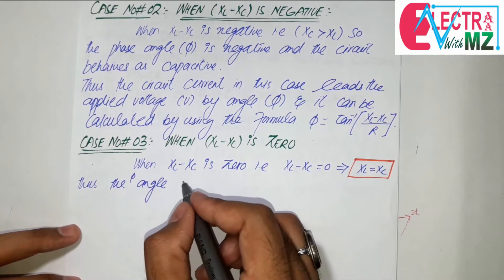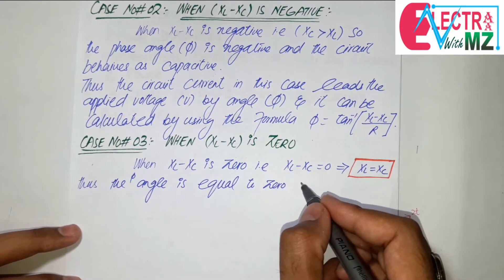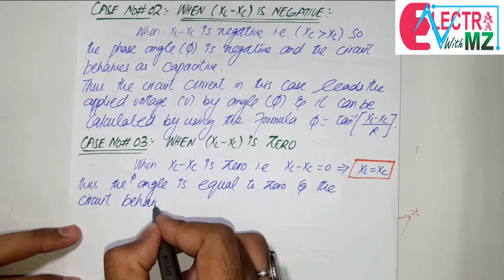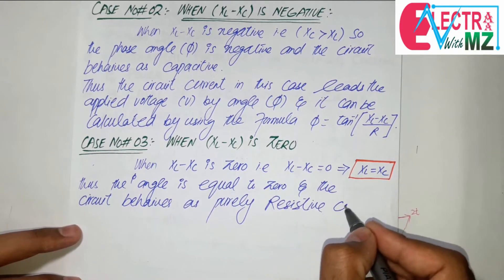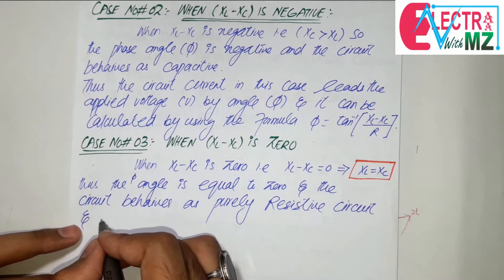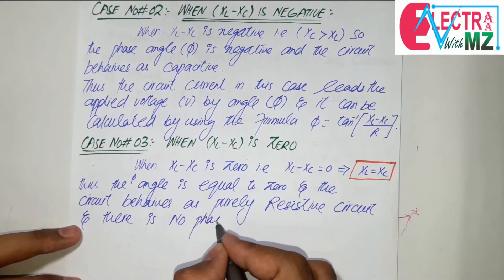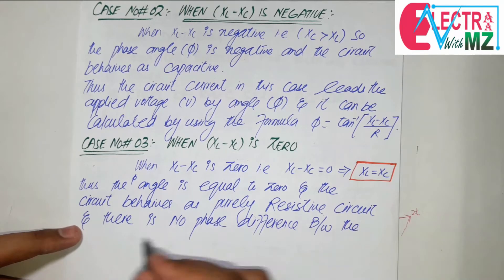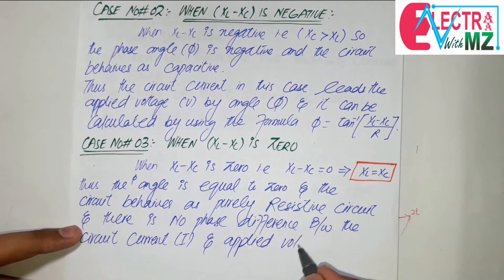Thus the phase angle is equal to 0. The phase angle is equal to 0 and the circuit behaves as a purely resistive circuit. There is no phase difference between the circuit current I and the applied voltage V.